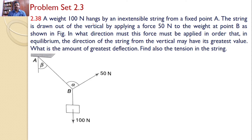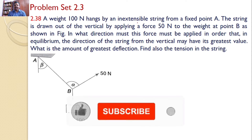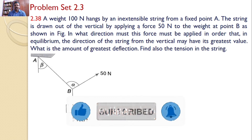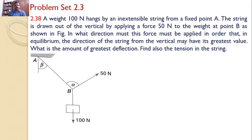A weight of 100 newtons hangs by an inextensible string from a fixed point A. The string is drawn out of the vertical by applying a force of 50 newtons to the weight at B, as shown in the figure. In what direction must this force be applied in order that, in equilibrium, the deflection of the string from the vertical may have its greatest value?